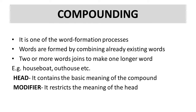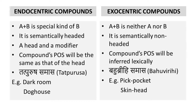Taking these basic things into mind, let's start with the types of compounds. The first distinction is between endocentric compounds and exocentric compounds. In all the types, we suppose that AB is a compound and A and B are two different words. In endocentric compounds, A plus B denotes a special kind of B — A modifies B, B is the head, and A is the modifier. Endocentric compounds have the head present within them; they are semantically headed compounds.